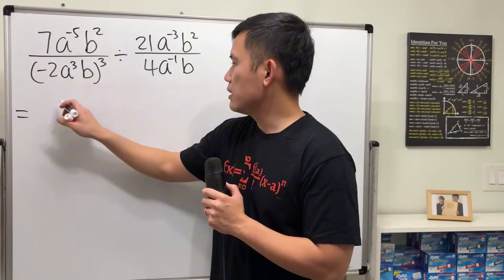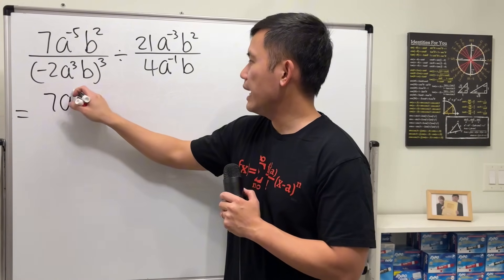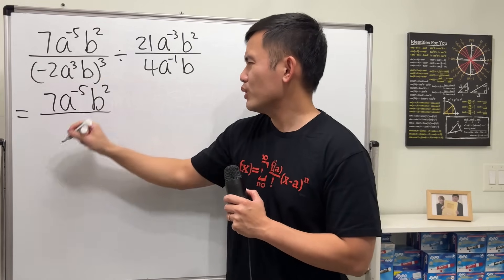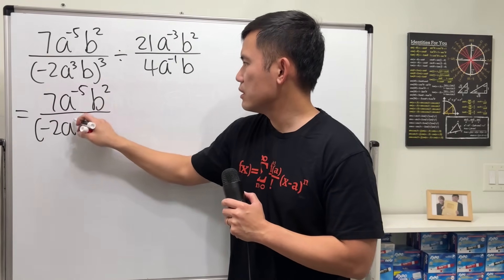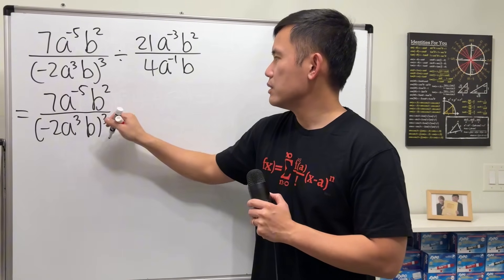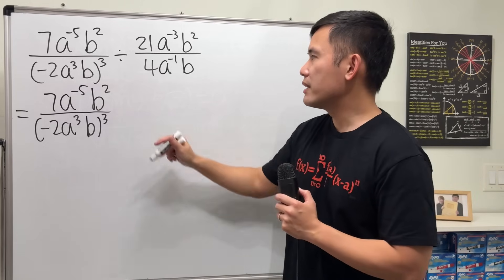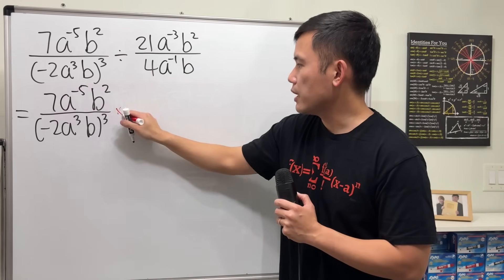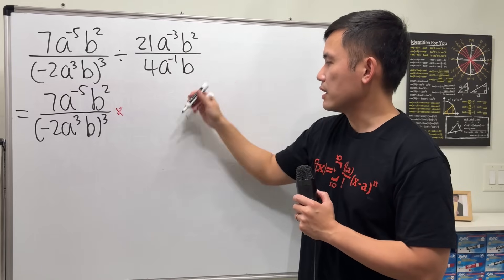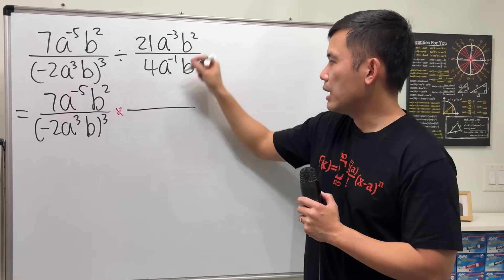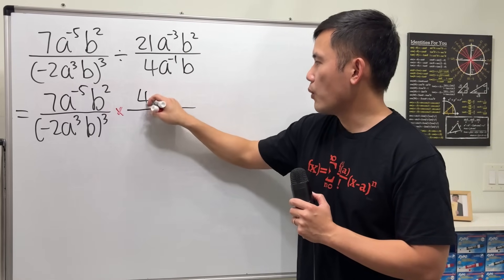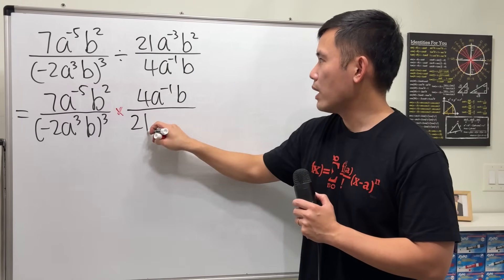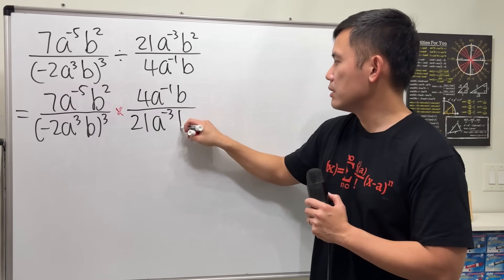Right here, let's just keep it: 7a to the negative 5, b squared over — and right here we'll just keep it the same too. I'm going to change the division to a multiplication and then flip the second one. So I put this up, which is 4a to the negative 1 times b, and I put this down, which is 21a to the negative 3 times b squared.